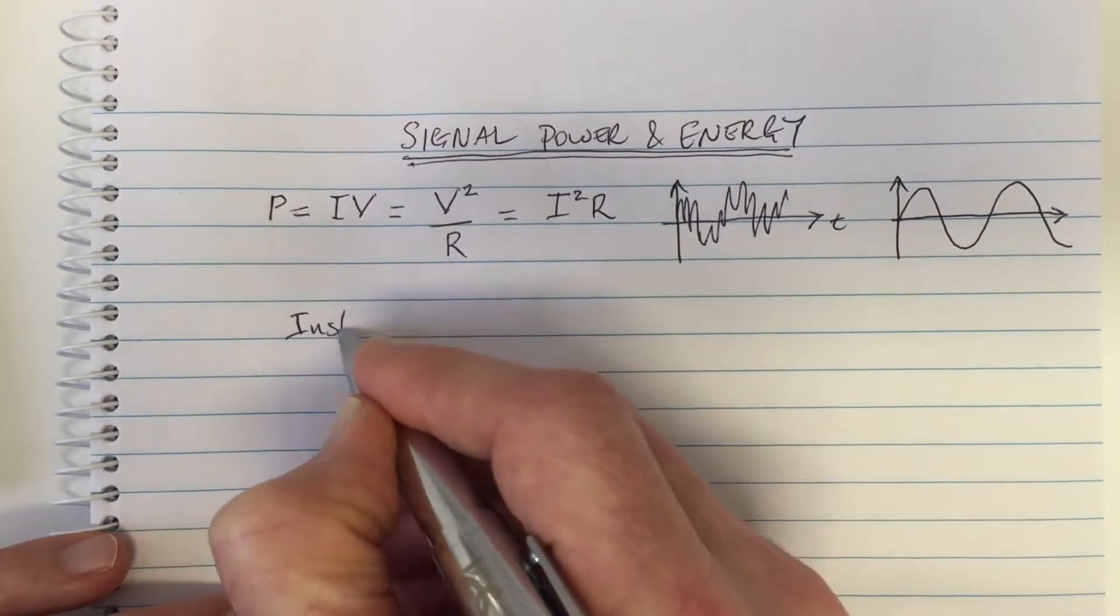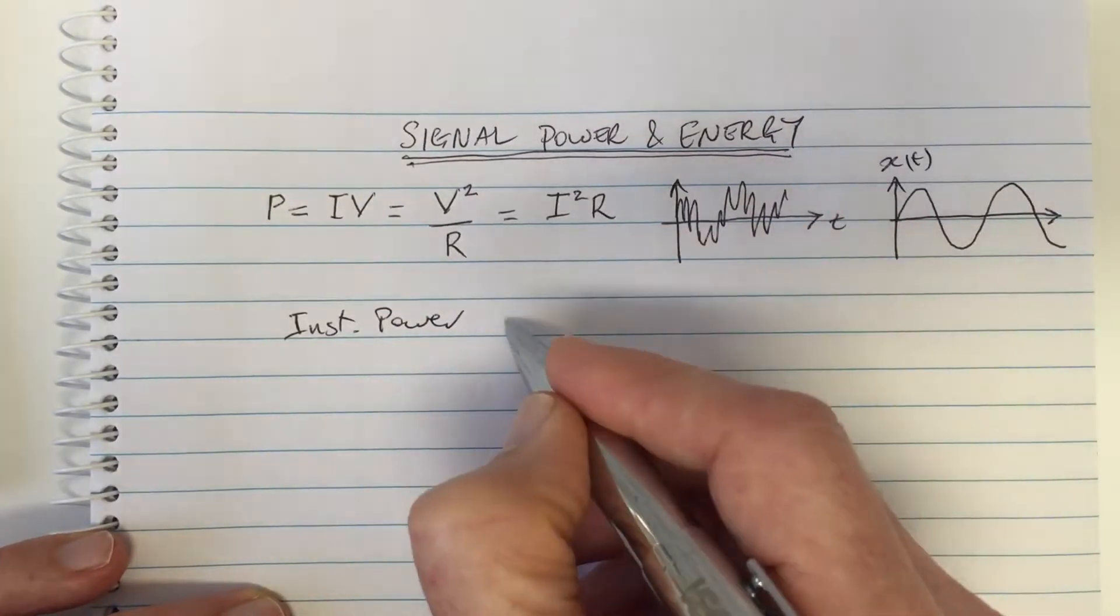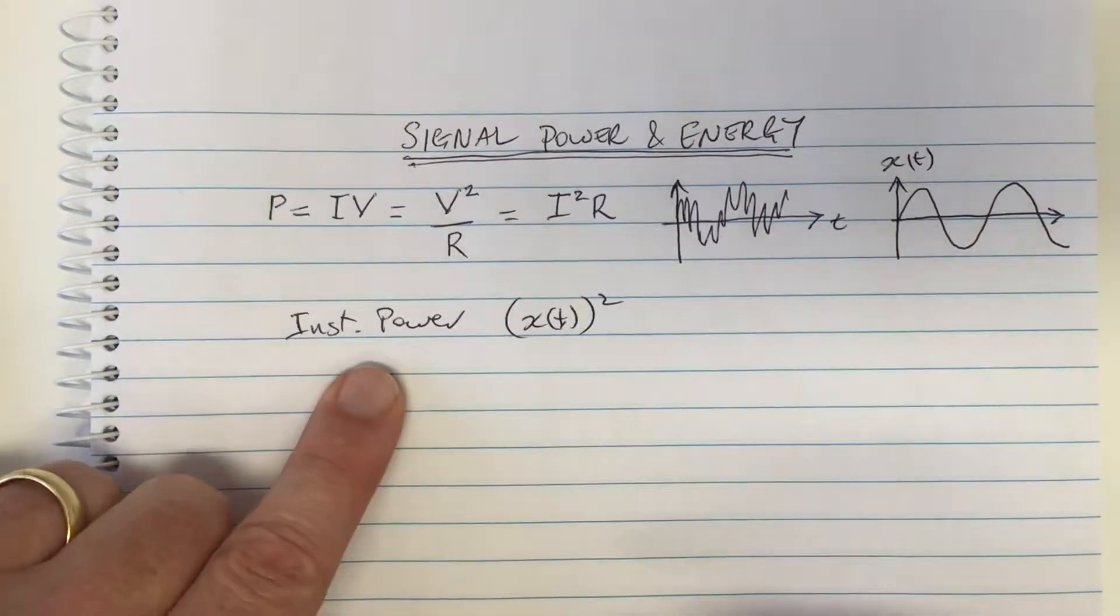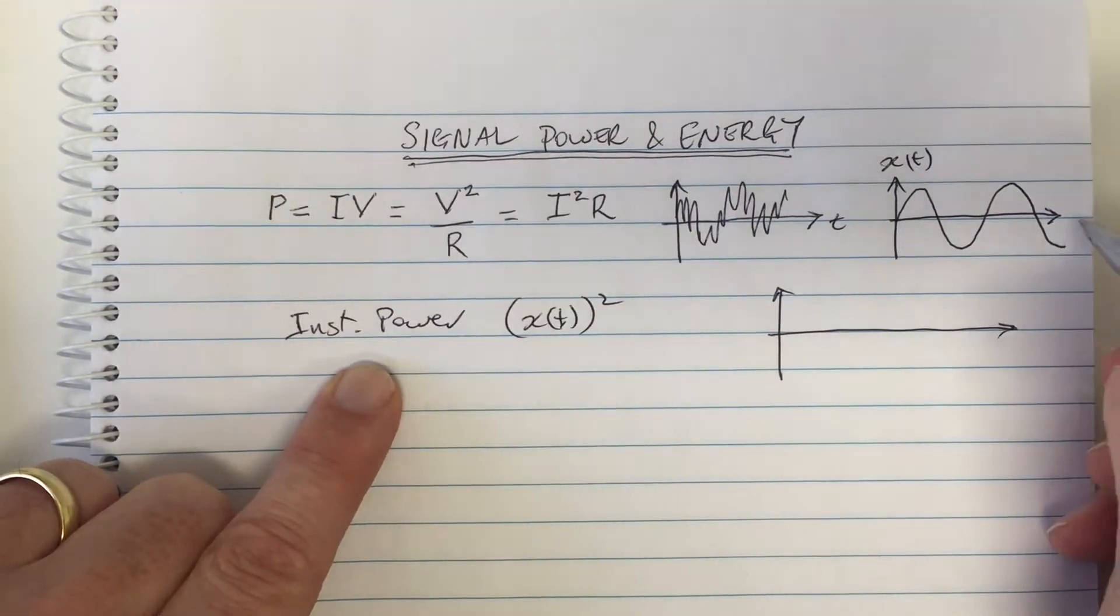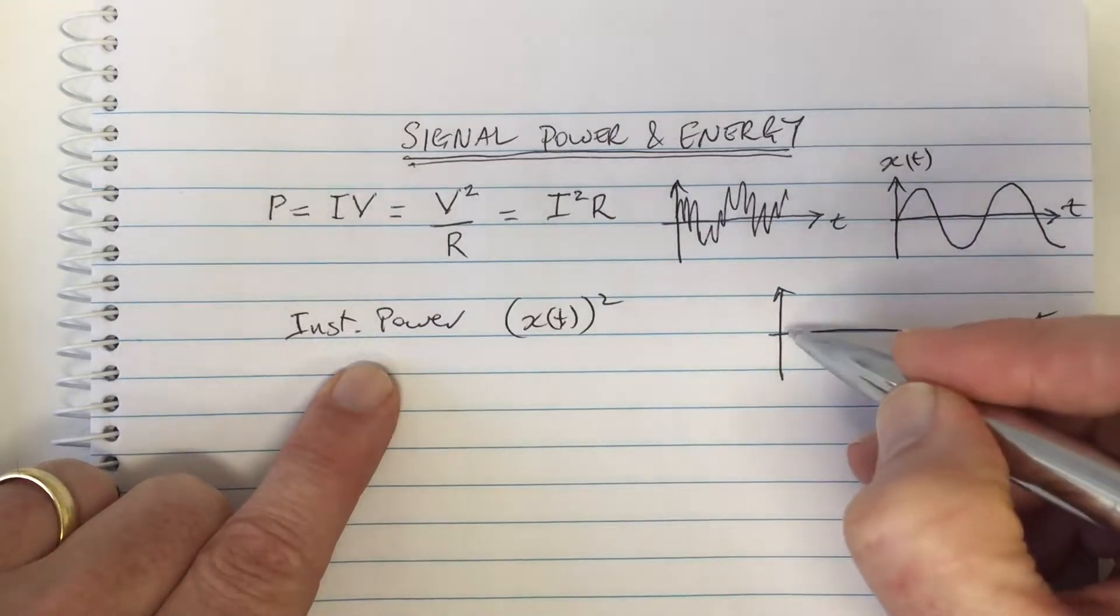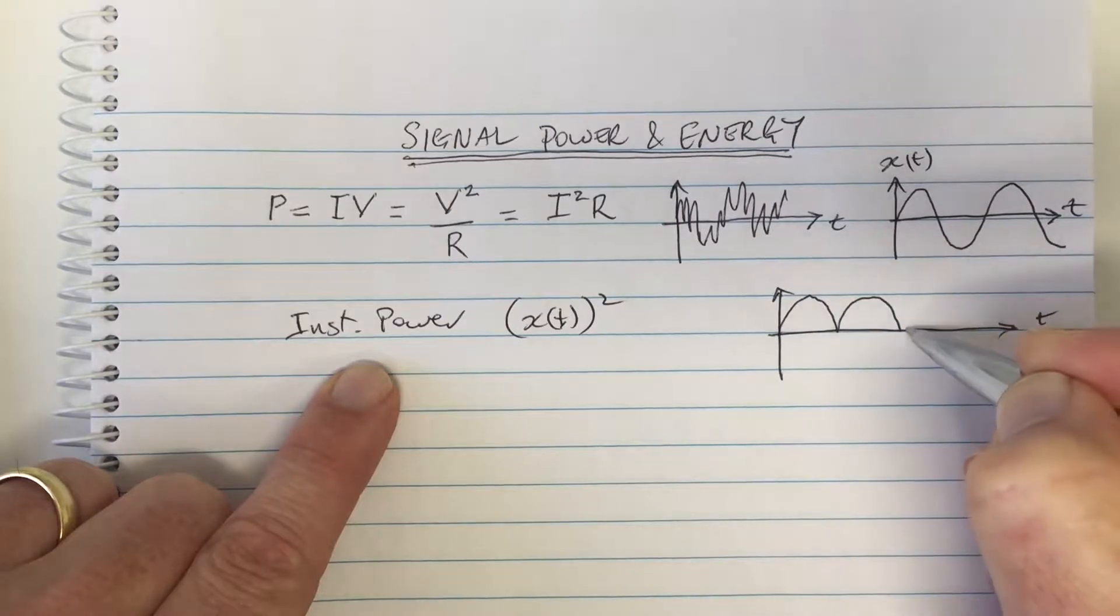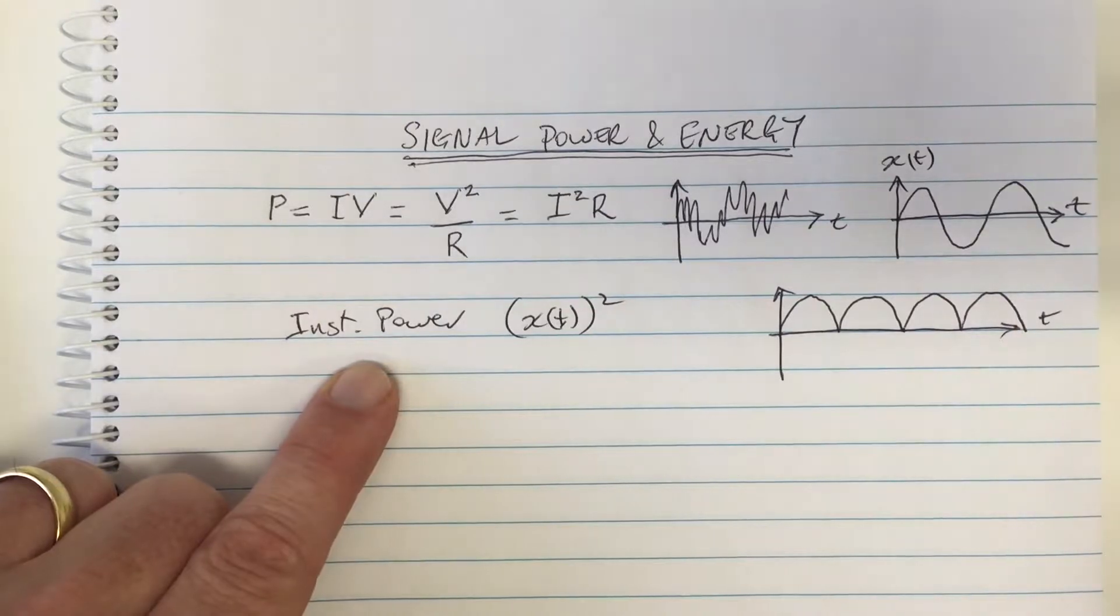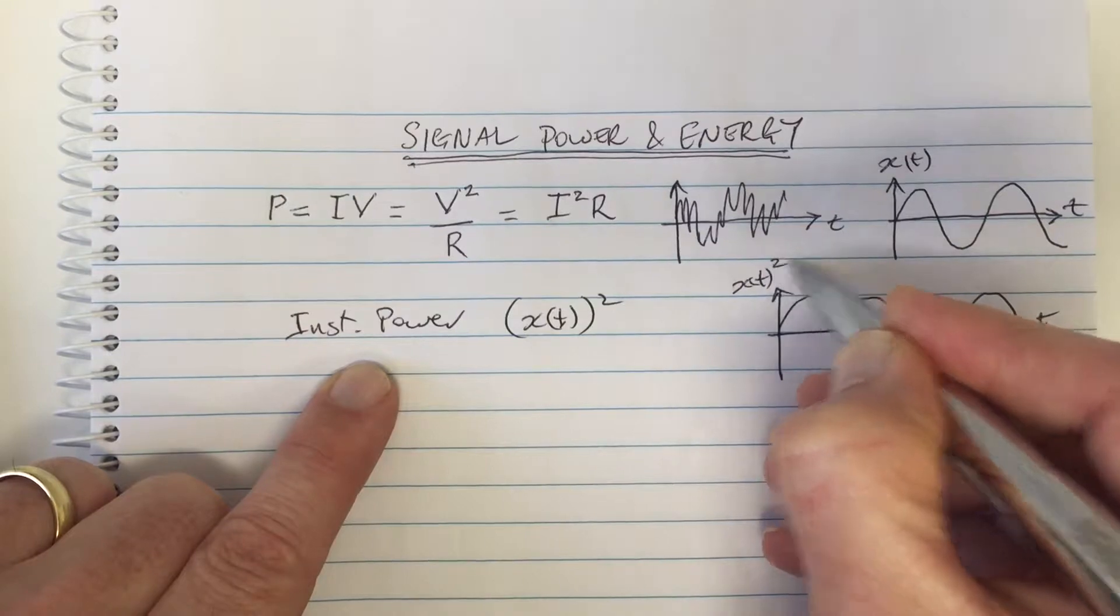So instantaneous power, instantaneous power of the signal, if this signal is x(t), is defined as x(t) squared. So this is what we call instantaneous power. And for the sine wave example, if we think of signals and waveforms which I always encourage people to do, that's the square of this signal. So the square of this signal is something that is always positive - that negative gets squared which means it becomes a positive. And so this is the power of the signal, x(t) squared.